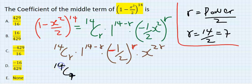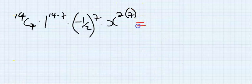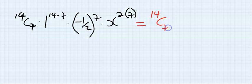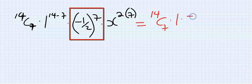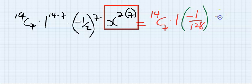So we substitute 7 for r: 1 to the power of (14 - 7) and this is (-½) to the power of 7, and this is x to the power of (2 times 7). So here I'm going to have 14C7 times 1. If you solve this, you're going to get -1 over 1²⁸, then on this side I'm going to have x to the power of 14.